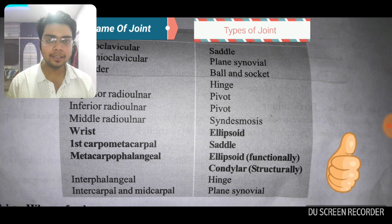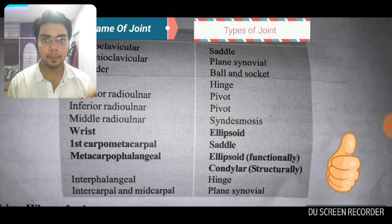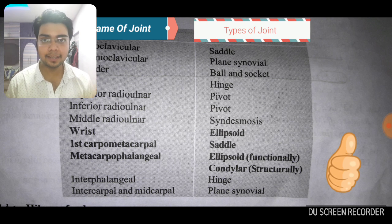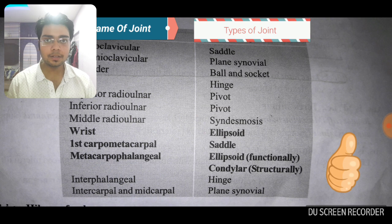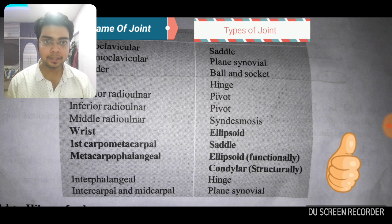I will be telling some of the important types of joint along with the types of epiphysis which are important for your exam. The first carpometacarpal joint is a saddle joint. Now the middle radio-ulnar joint — the middle part is actually the interosseous part, the interosseous membrane — so that part is syndesmosis.